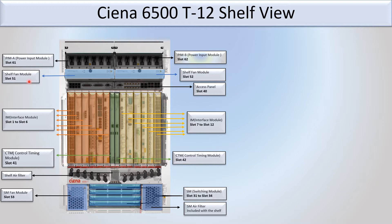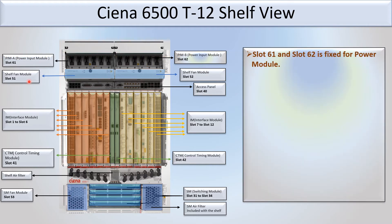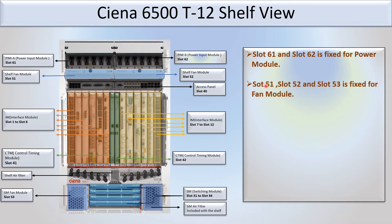Different modules are used in the C&S 6500. Slot 61 and slot 62 — these two slots are fixed for the power module. You can see in the picture: slot 61 and slot 62 are for power input modules PIM A and PIM B.